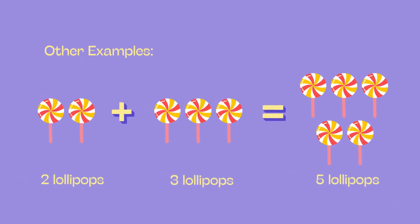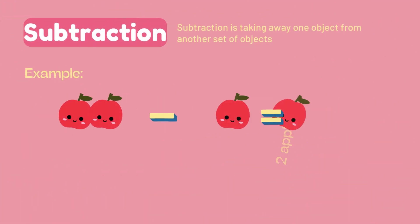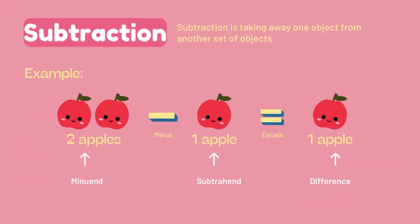Here's another one: two lollipops plus three lollipops equals five lollipops. Great job! Now let's talk about subtraction. Subtraction is taking away one object from another set of objects.